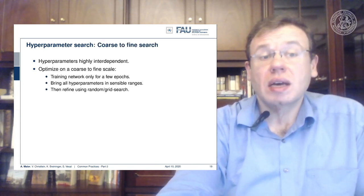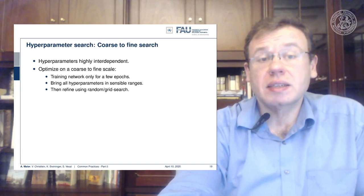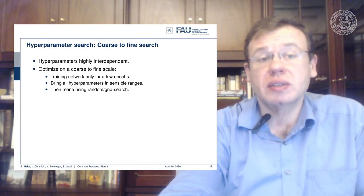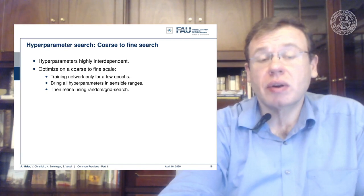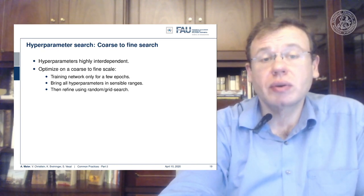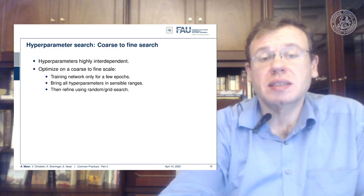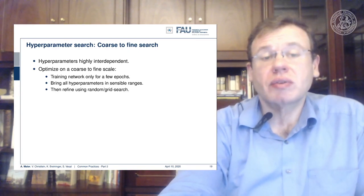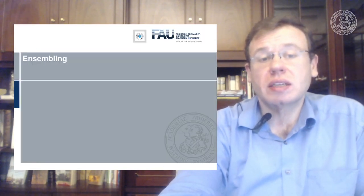Hyperparameters are highly interdependent, so you may want to use a coarse-to-fine search. You optimize on a very coarse scale first and then make it finer and finer. You may only train the network for a few epochs and bring all the hyperparameters into sensible ranges, then refine using random and grid search.